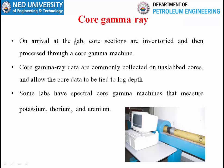Core gamma ray: when cores have been collected and sent to the lab, they generally pass through a gamma ray machine. Core gamma ray data are commonly collected on unslabbed cores and allow the core data to be tied to log depth. Some logs have spectral gamma ray machines that measure potassium, thorium, and uranium. One important thing: we only collect a small section of the wellbore through coring.